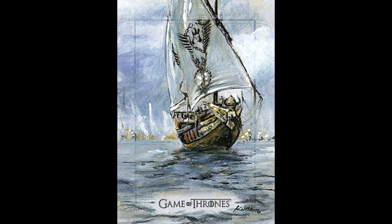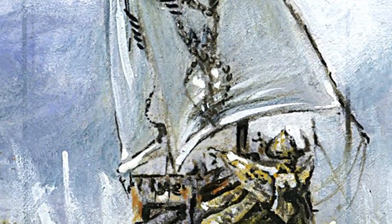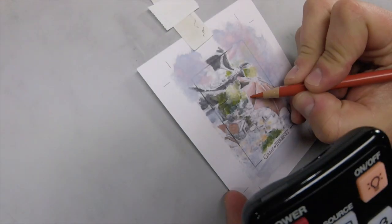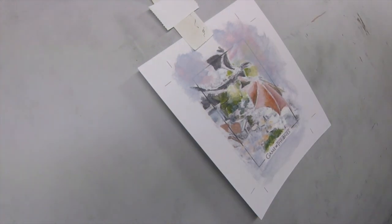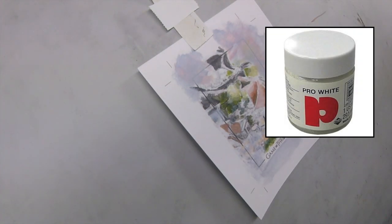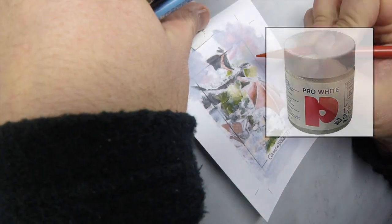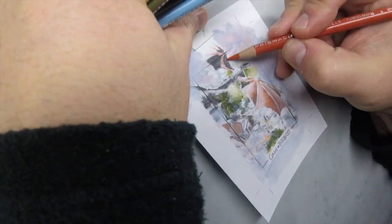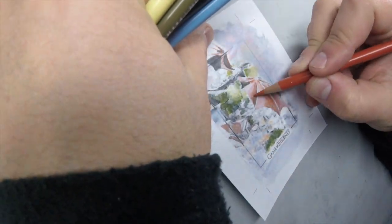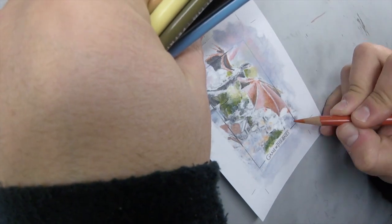And then coming up here, I'm using a little bit of pro white. This is another artist tip for those of you that are looking to bring your work to the next level. I found that pro white is a really good product to work with because it covers everything. It's very opaque.